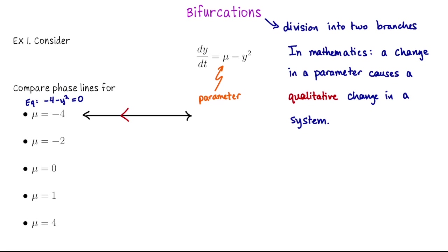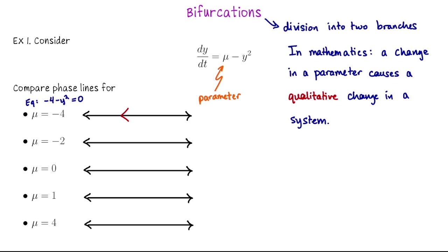Let me copy this phase line for the other four values of mu. What happens if mu equals negative two? If I plug negative two into the right-hand side and look for an equilibrium solution, I'd need y squared equals negative two — once again, there's no real solution. And moreover, for all values of y, dy/dt is negative. So this phase line looks the same as the one above.